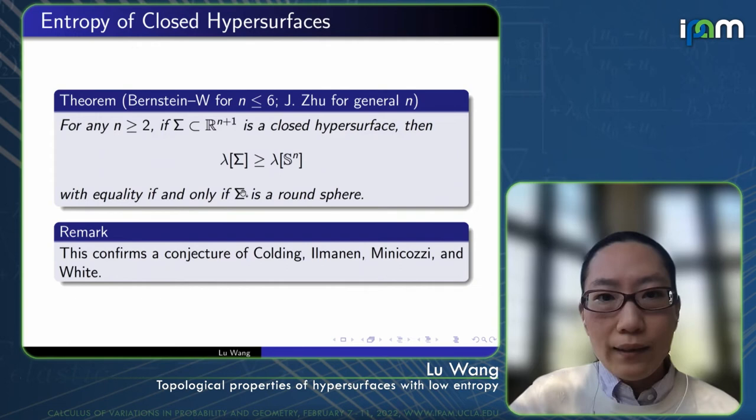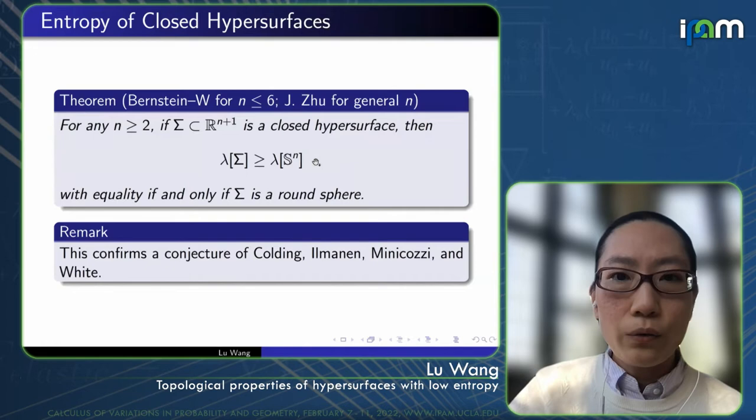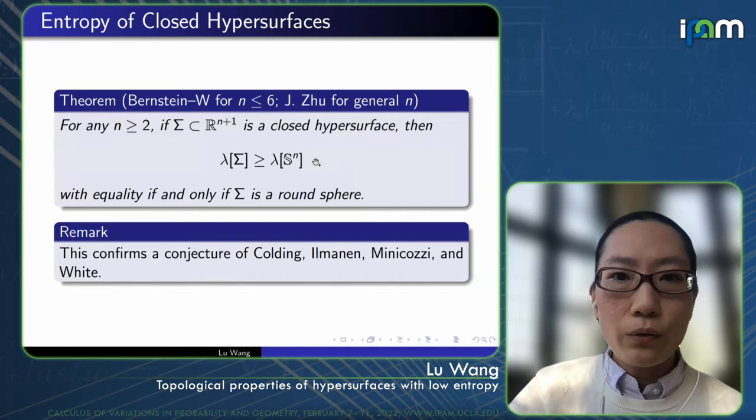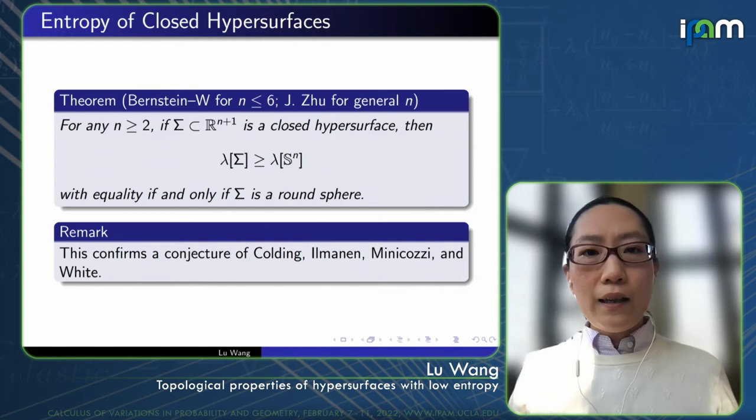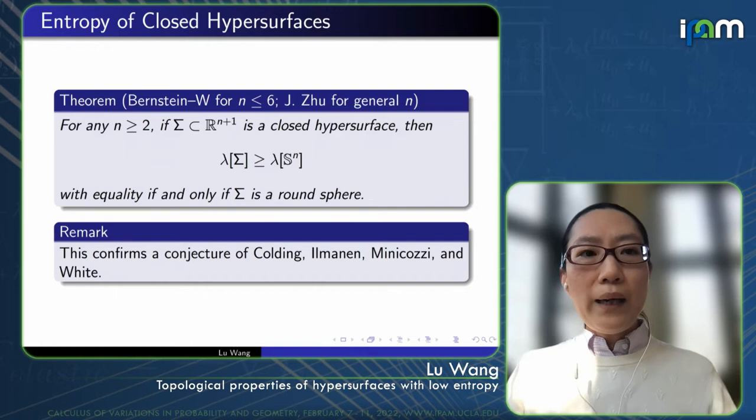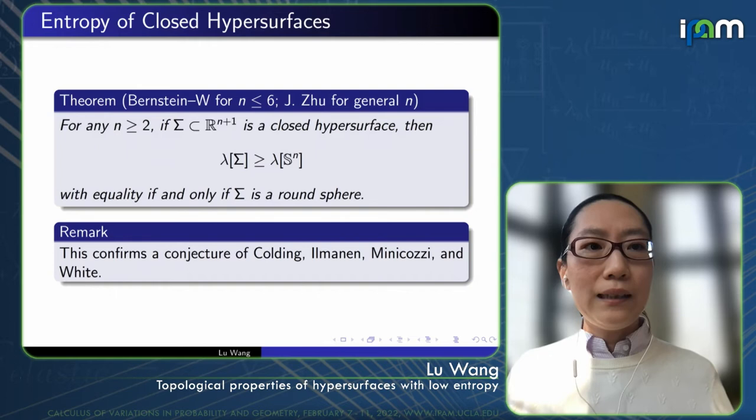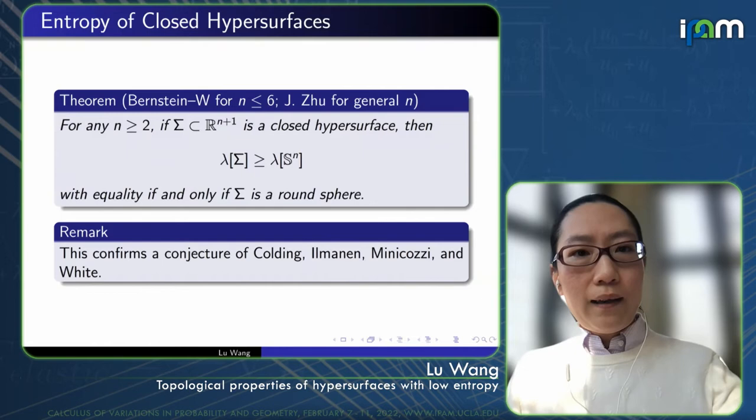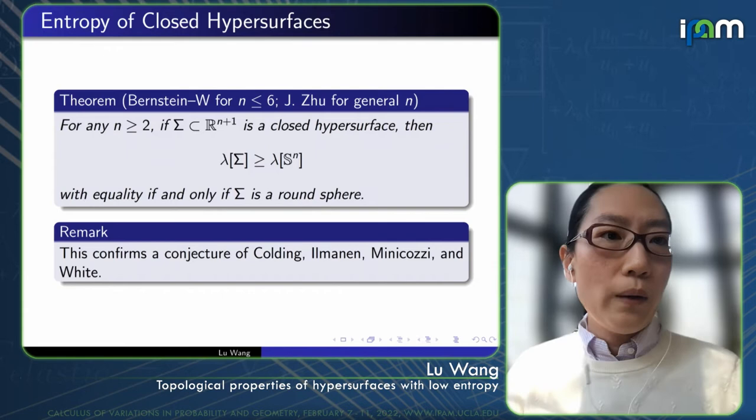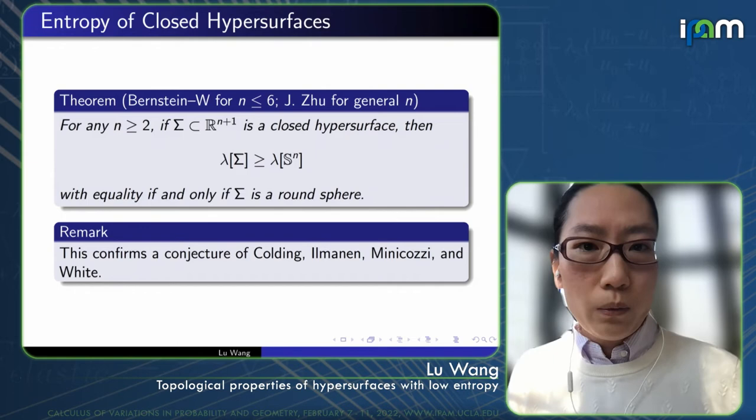This confirms a conjecture of Colding, Ilmanen, Minicozzi, and White. I want to point out that this entropy lower bound is strictly bigger than one, in contrast to the entropy of a plane. You may want to try taking a sequence of closed hypersurfaces and allow them to converge to some minimal value of this entropy. The issue is you can imagine a sequence of closed hypersurfaces that approach the hyperplane in some sense. The hyperplane has entropy equal to one, but this theorem basically says that the entropy of the closed one, no matter how close it is to the hyperplane, will have entropy strictly bigger. So it's not going to follow from that kind of minimizing approach.